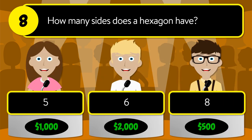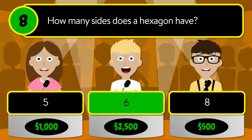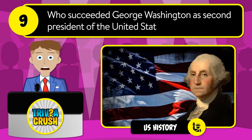Question number eight: how many sides does a hexagon have? Is it five, six, or eight? The correct answer is six.